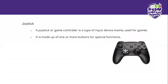Our next pointing device is a joystick. A joystick or a game controller is a type of input device mainly used for games. It is made up of one or more buttons for special functions. So if you are moving the players or playing the game, you are controlling what is on your screen using the joystick's buttons.